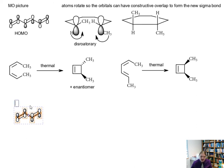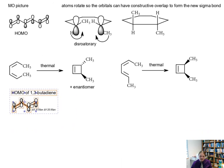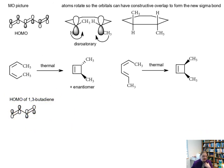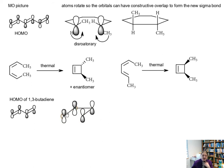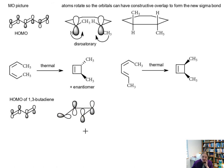Here's the HOMO of butadiene. This particular conformation isn't as useful as folding it around so that it looks like it's about ready to form the cyclic structure. Here is the HOMO of butadiene with its orbitals. We can see in this example that in order for the orbitals to rotate to form the new bonds, they need to rotate differently — both orbitals are going to rotate in the same direction, in this case counterclockwise, to form that new bond for constructive overlap.